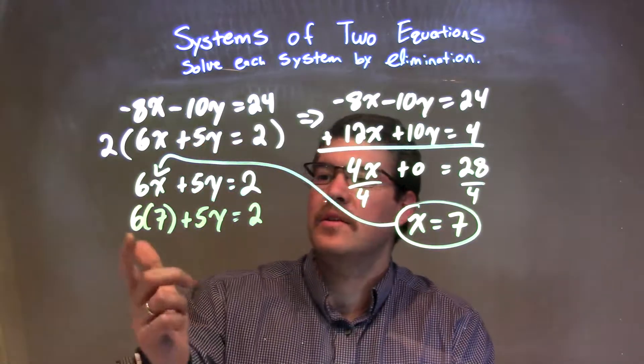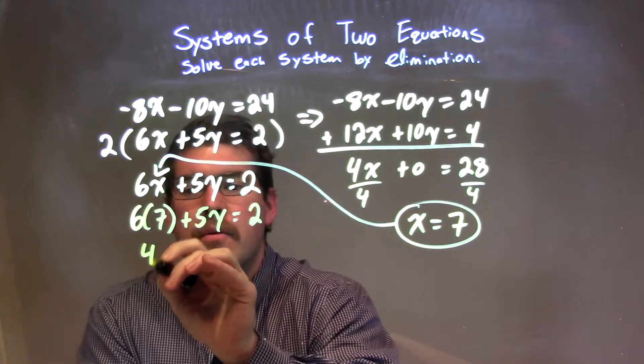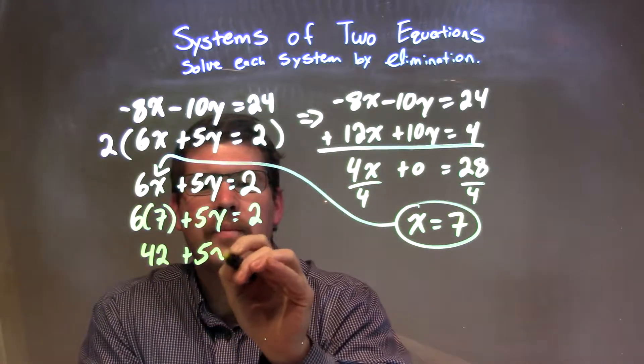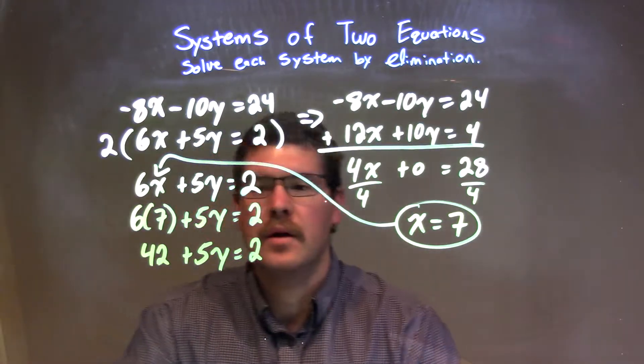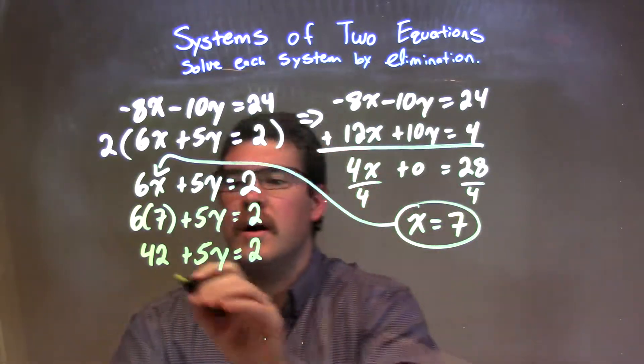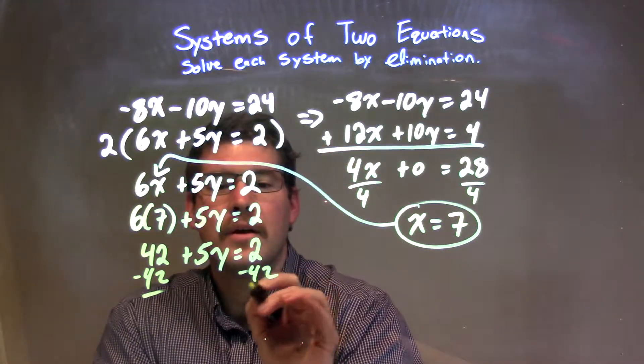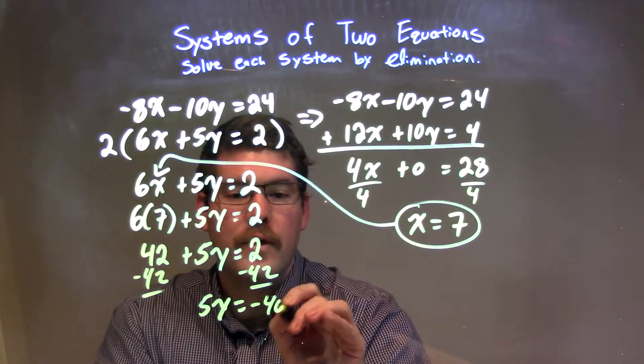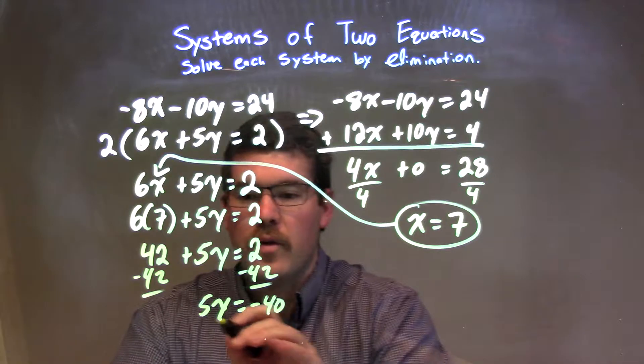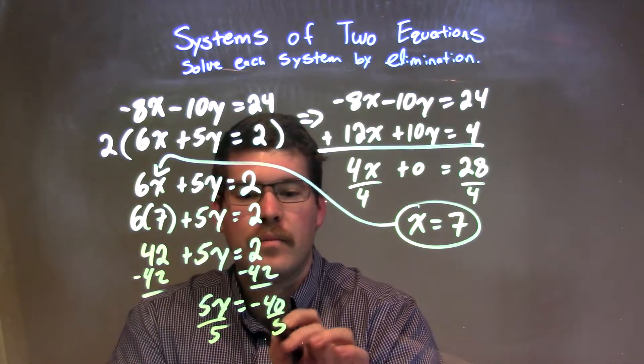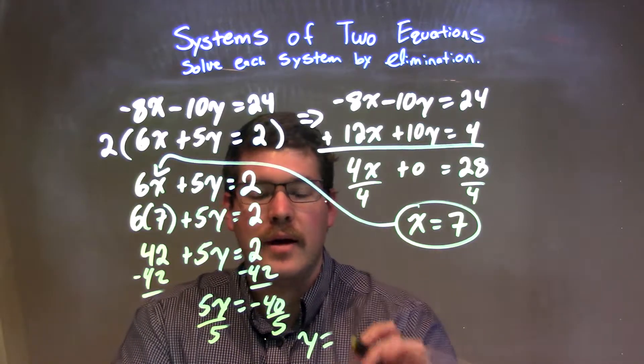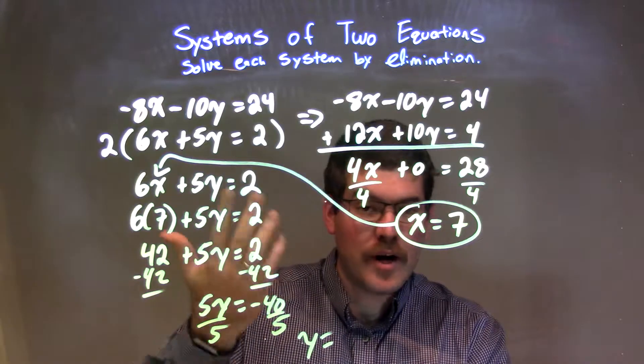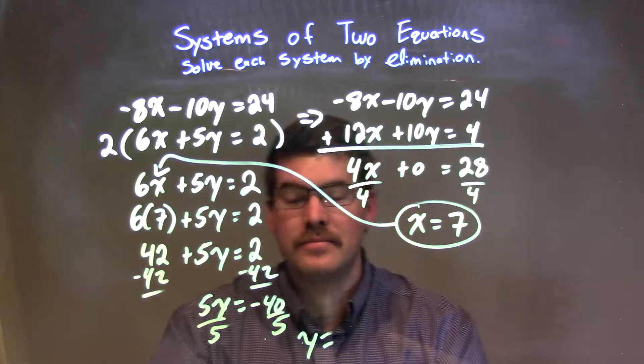5y equals 2. And I'm going to solve for y. 6 times 7 is 42, plus 5y equals 2. Now I'm going to subtract 42 from both sides. 5y equals negative 40. Divide by 5, and I have y by itself. Negative 40 divided by 5 is negative 8.